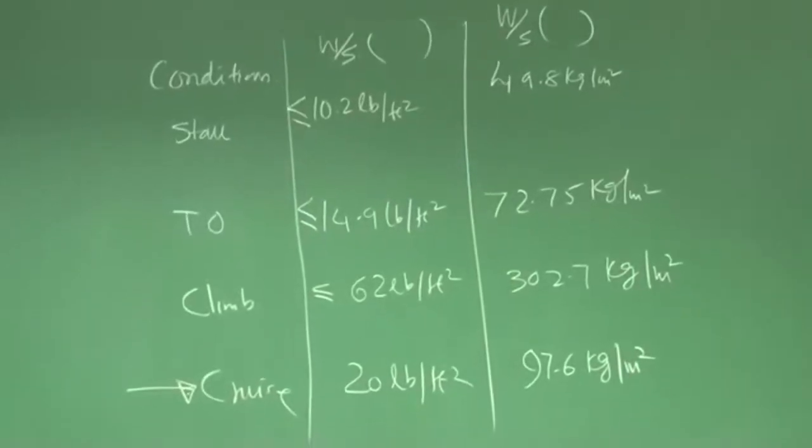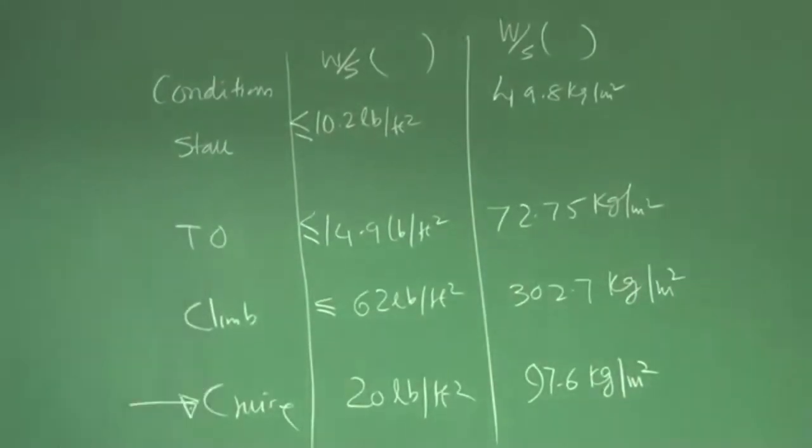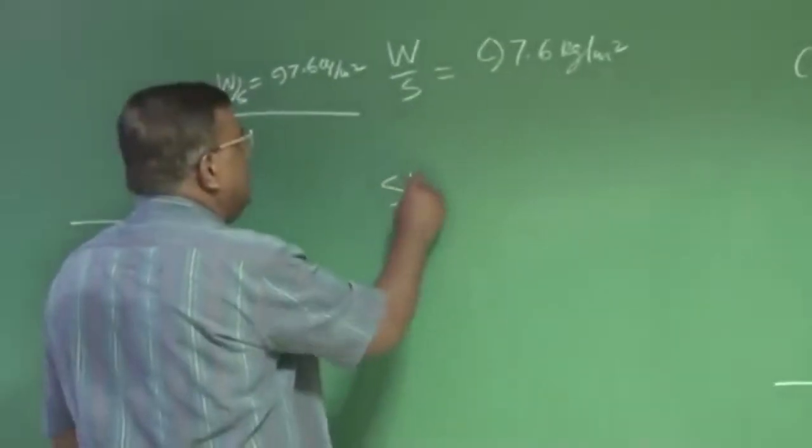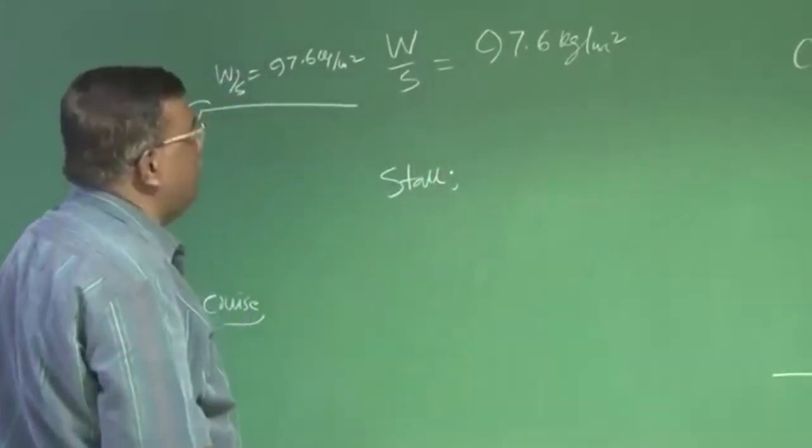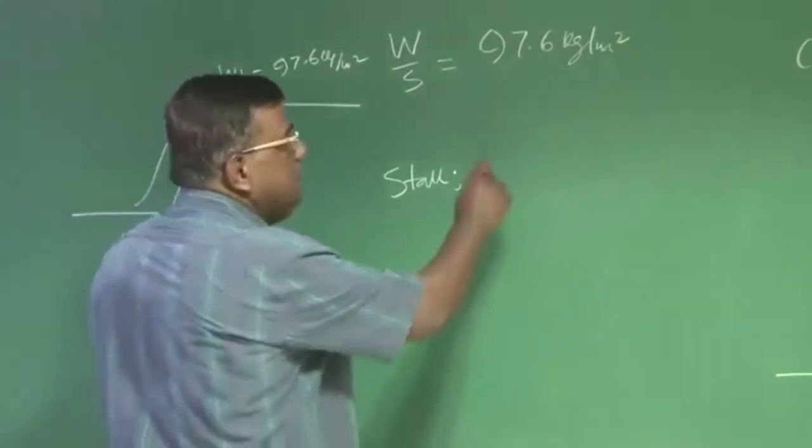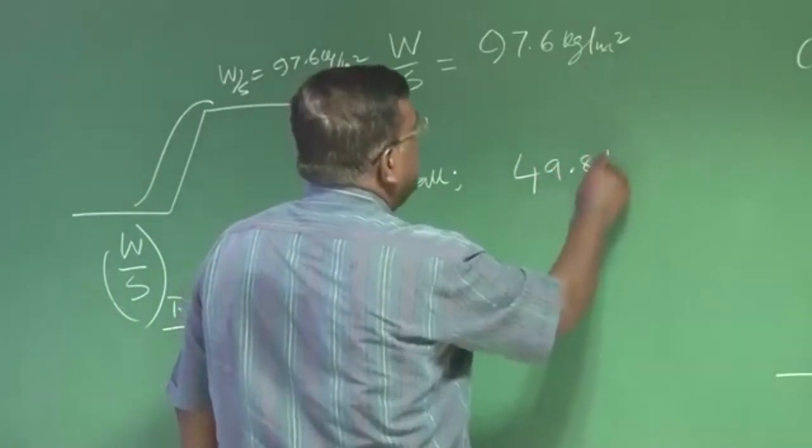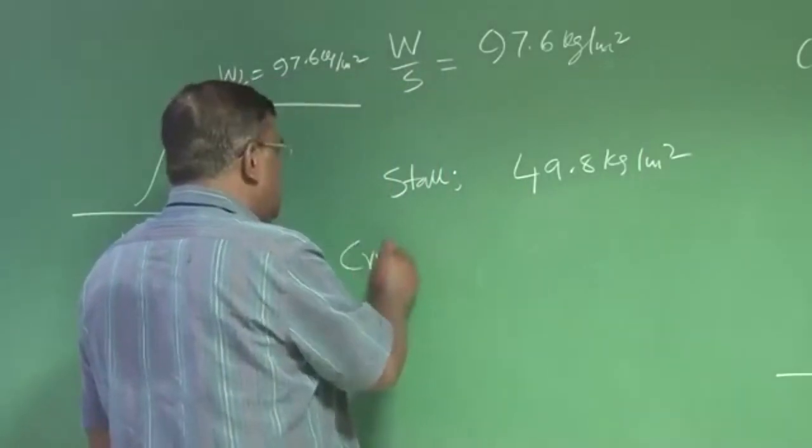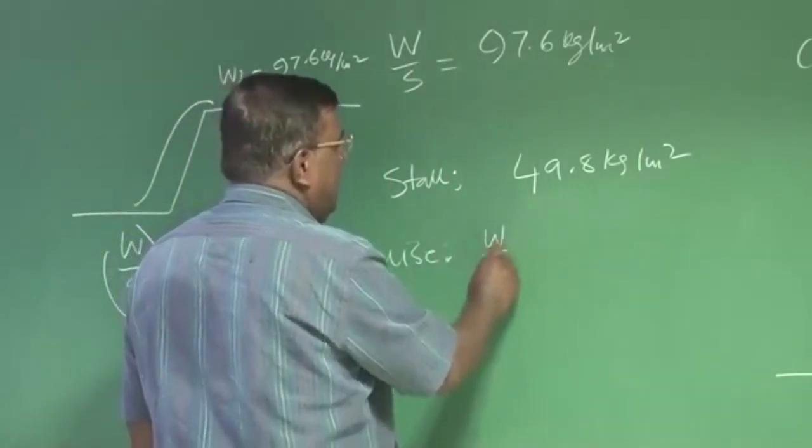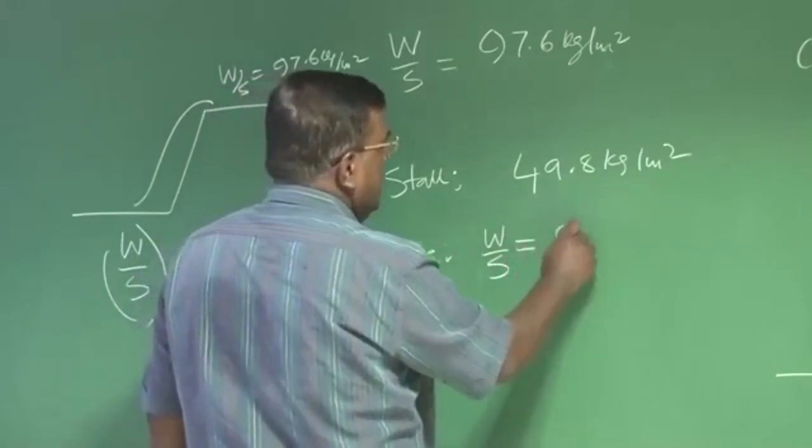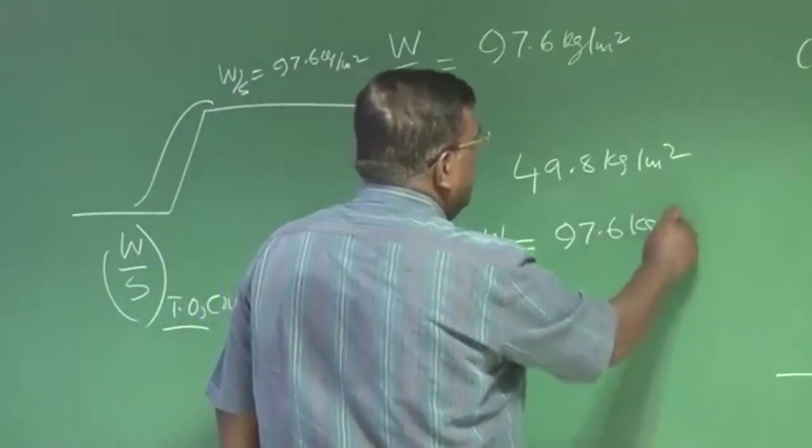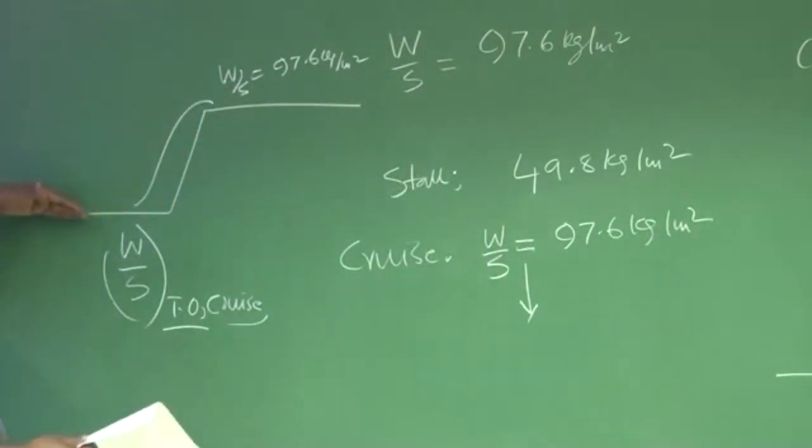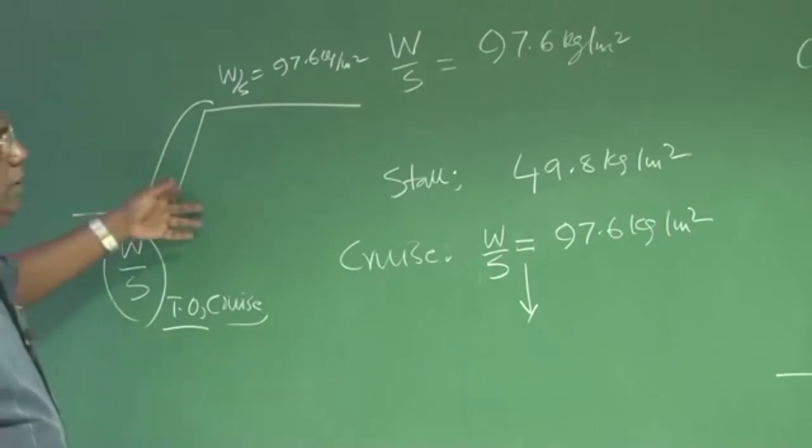Which is a limitation of 50 knots, cannot be more than 50 knots, it tells me it is around 49.8 kg per meter square. And if I select W by S based on cruise, it tells me I will have W by S as 97.6 kg per meter square and which one I convert back to the takeoff from here, it will be little more than this. It may be 120 kg per meter square.